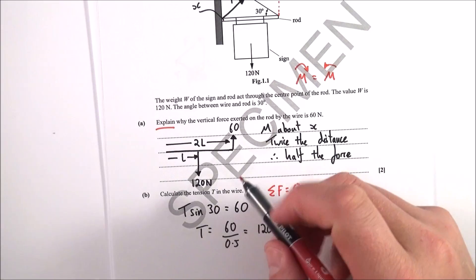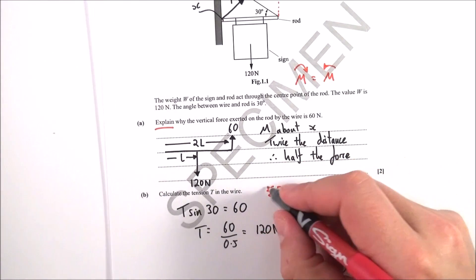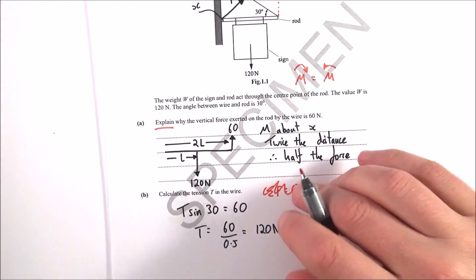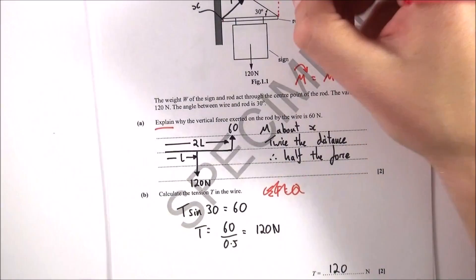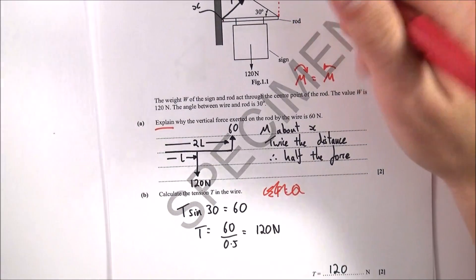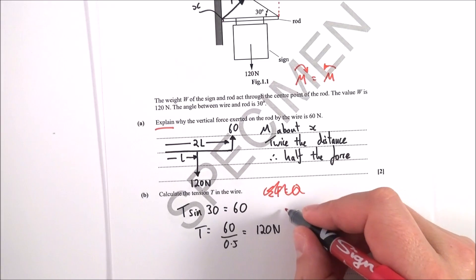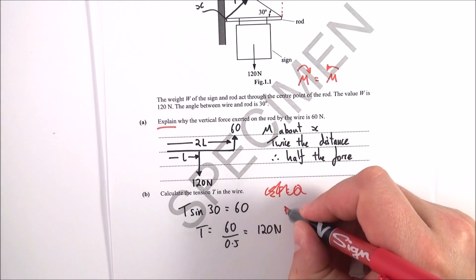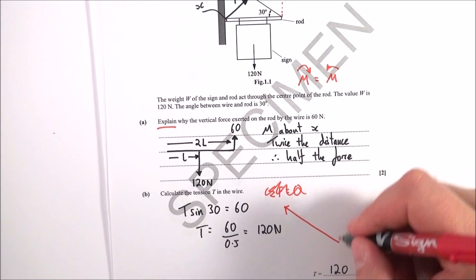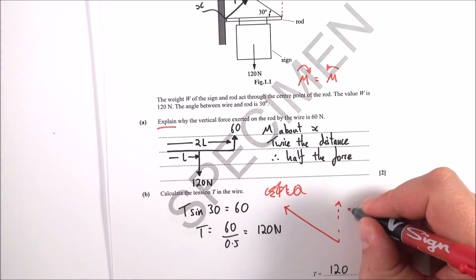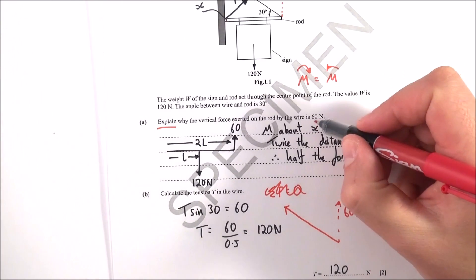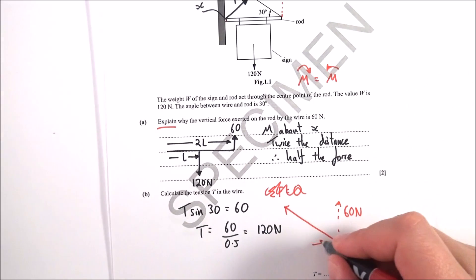So question b looks at calculating the tension in the wire. Just ignore that, that was a mistake I made. So for the wire we basically know the vertical component of the tension and effectively if we think about it like this we've got the tension acting along the wire. We've got a vertical component which is equal to 60 newtons which is what the question before just gave us and we know that this angle down here is equal to 30 degrees.